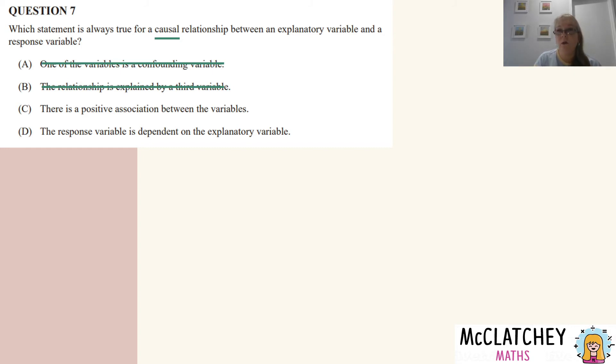The next thing says there's a positive association between the variables. Now that's not always going to be true. Sometimes you can have a causal relationship where there is a negative association. For example, the more distance you travel in a car, you might be expecting the car's value to go down. So as one goes up, the other goes down. That's a negative relationship. So that's a possibility as well. So that rules out C because positive or negative could be true for a causal relationship.